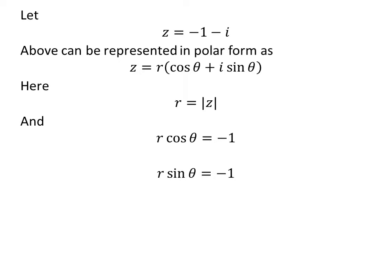Here, r is equal to modulus of Z, and r times cosine of theta is equal to minus 1, and r times sine of theta is equal to minus 1.